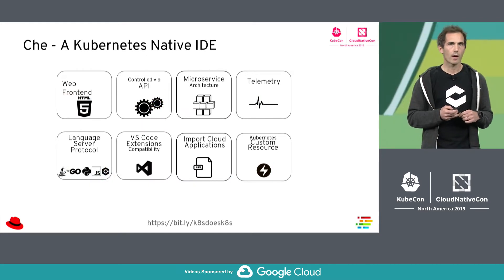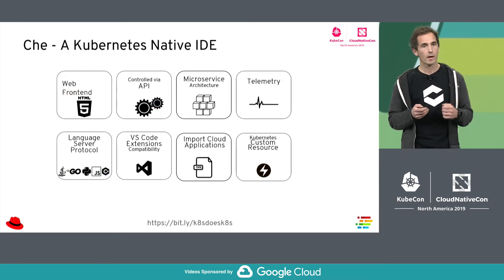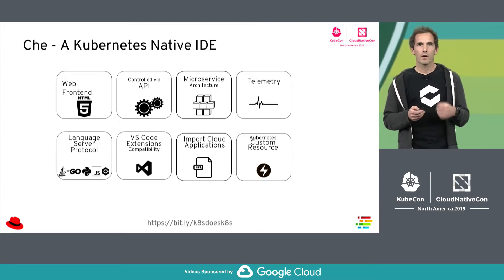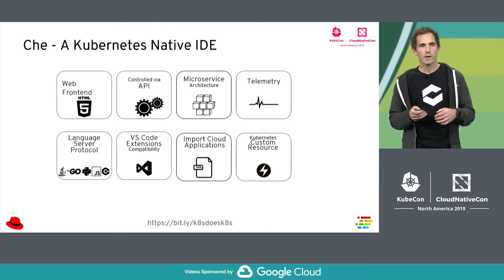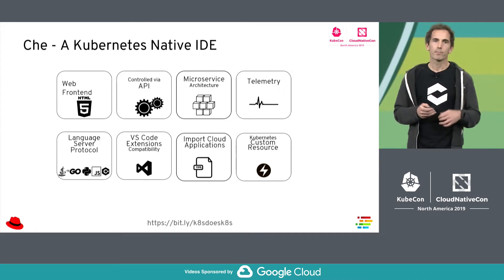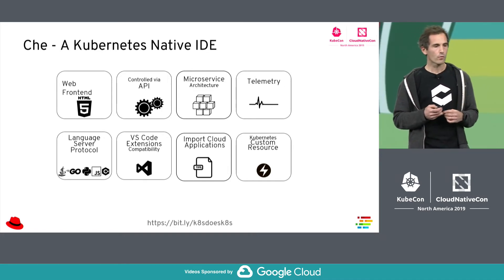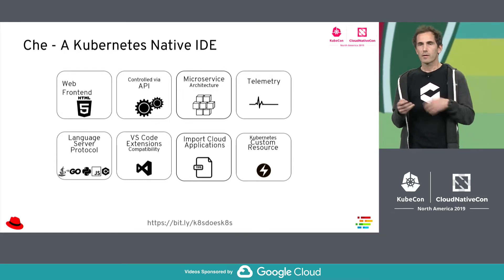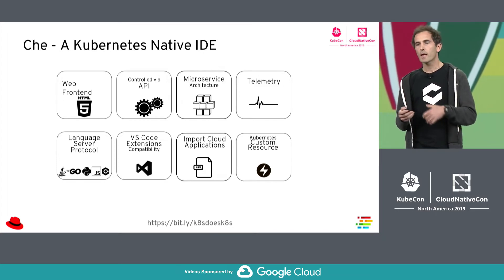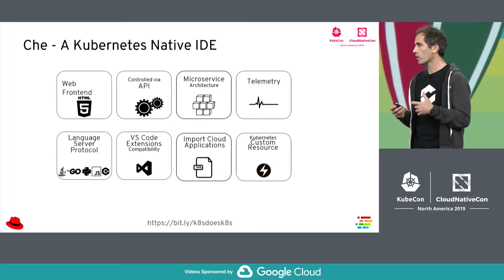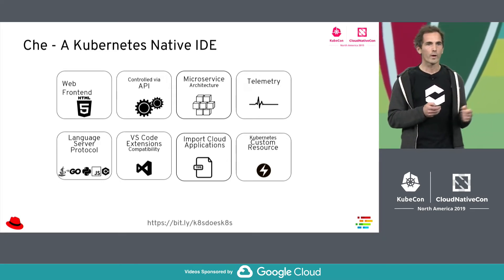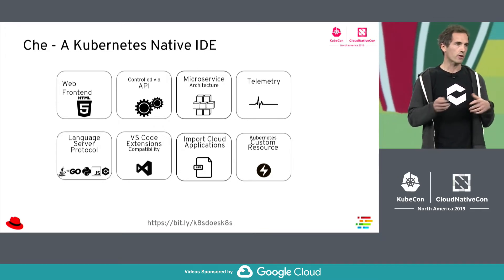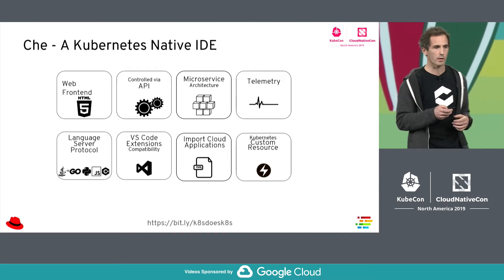Che is a Kubernetes-native IDE. It has a web frontend. It can be controlled using an API. It has a microservice architecture, telemetry, and language server protocol support, so you can add languages with small services that run in containers. It is compatible with Visual Studio Code extensions. You can import cloud applications into your Che workspaces. We have also built a Kubernetes custom resource called Workspace and a controller for that, so it is completely integrated in Kubernetes.